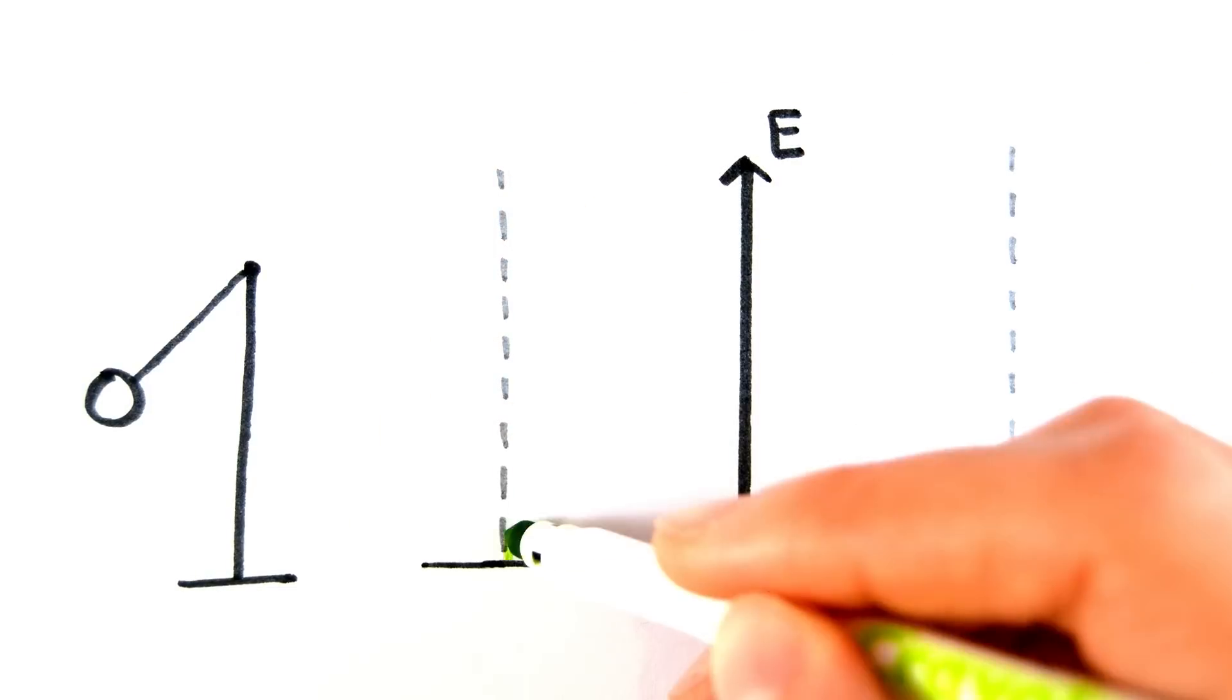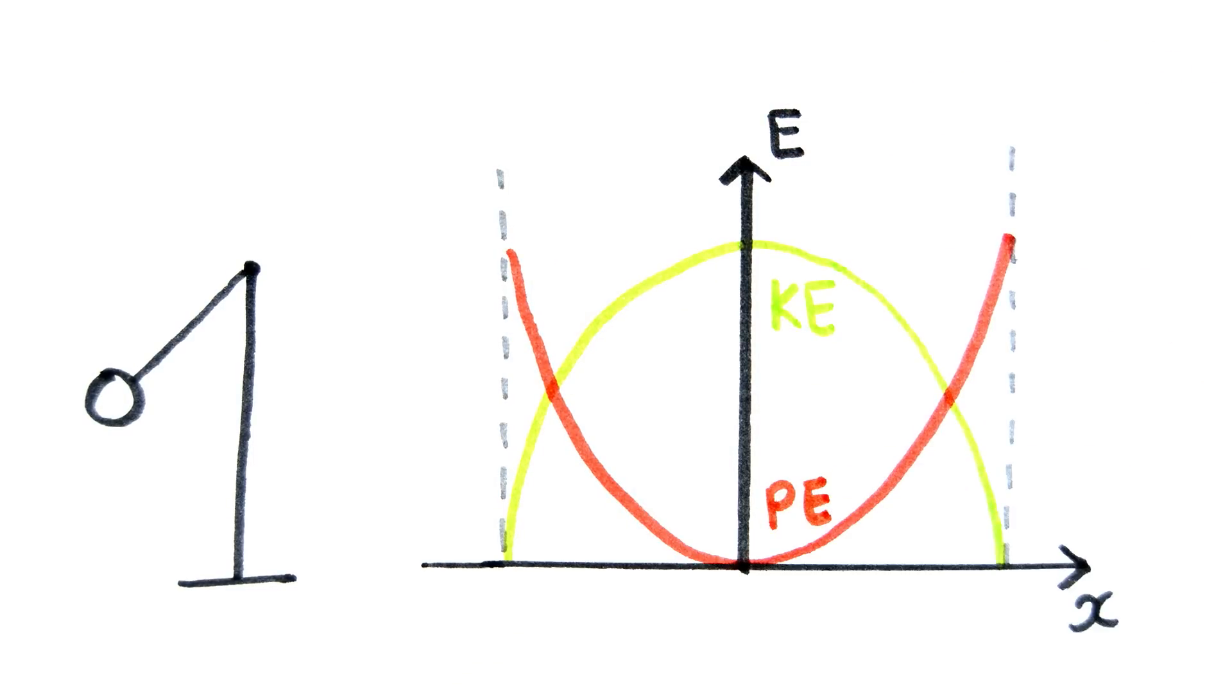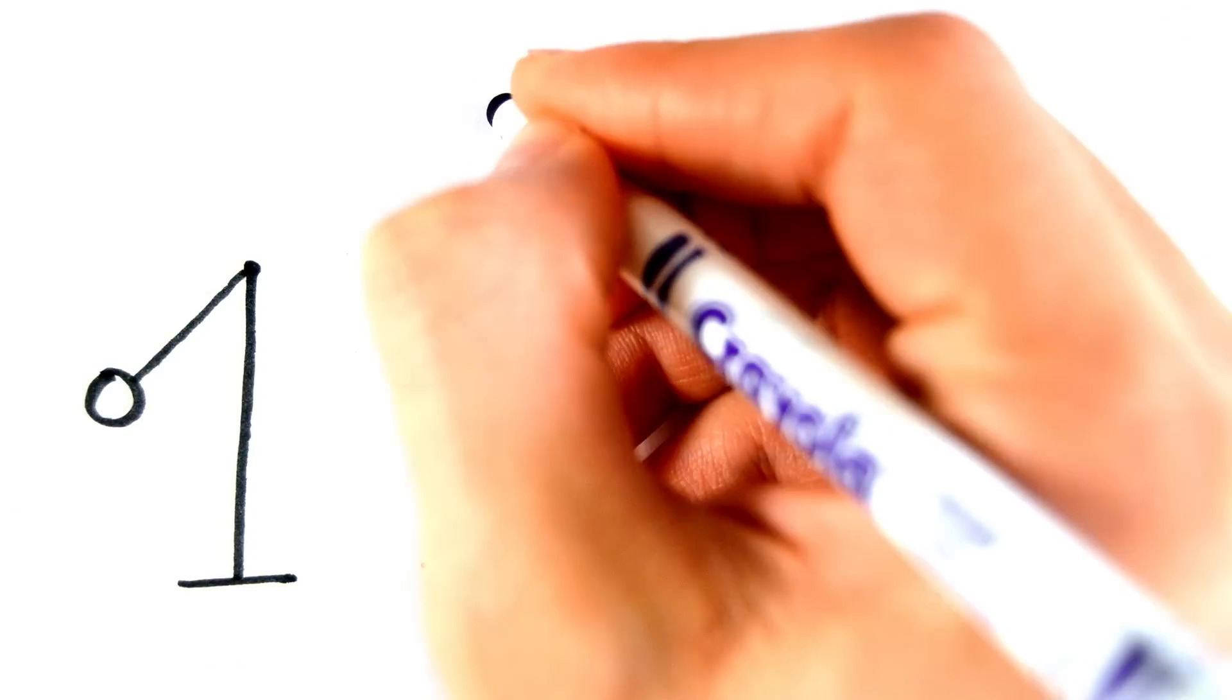If we were to plot an energy displacement graph, we could show the kinetic energy and potential energy as two parabolas that look like reflections of each other. This is because the energy is being converted between the two forms, but the total energy is always conserved.